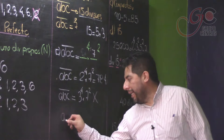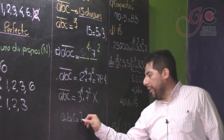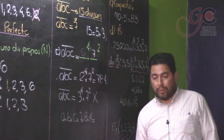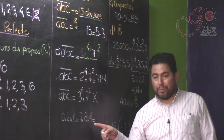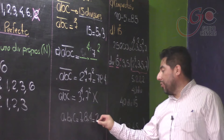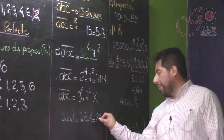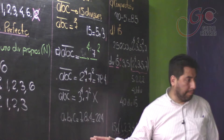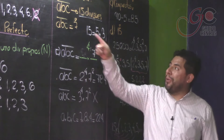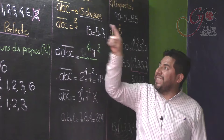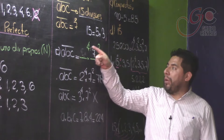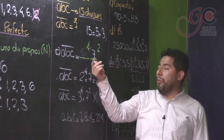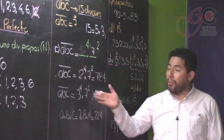¿Qué te pide el problema? El producto de A por B por C. ¿Cuánto vale A? 7. ¿Cuánto vale B? 8. ¿Cuánto vale C? 4. ¿Cuánto es 7 por 8 por 4? 7 por 8 = 56; 56 por 4 = 224. La respuesta para el problema es 224. El 7 era un factor obligatorio por el dato de que ABC es múltiplo de 7. ¿Por qué no acá en la cuarta? Porque 7 a la cuarta es de 4 dígitos. Así que el 7 va al cuadrado y se acompaña con el primo más pequeño posible, el 2, para que el producto no exceda los 3 dígitos. Con el 3 se excedería.